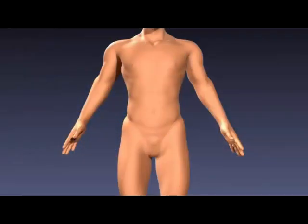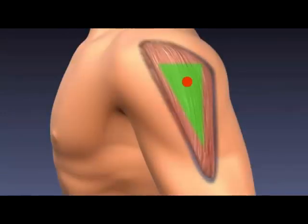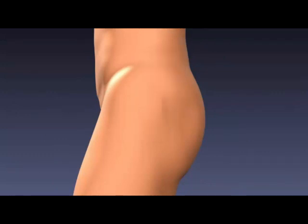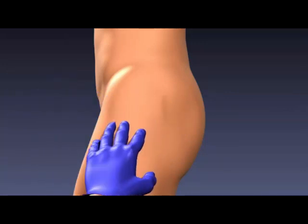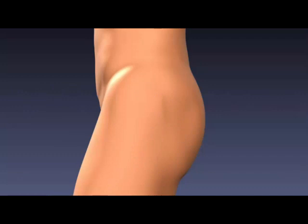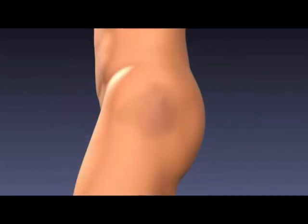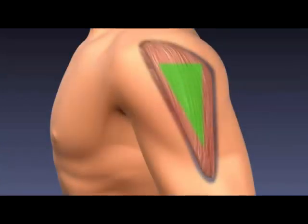Select an appropriate site for the injection. The vastus lateralis and the deltoid muscle are possible sites for IM injection, but the ventrogluteal site is preferred. Examine the integrity and amount of the patient's muscle mass and palpate the muscle. Areas of tenderness or hardness are not suitable injection sites. If the patient receives frequent injections, rotate the site selection. Inspect the area for bruising, inflammation, and edema. If the skin is bruised or shows signs of infection, use a different site.